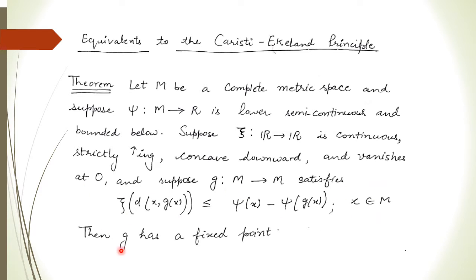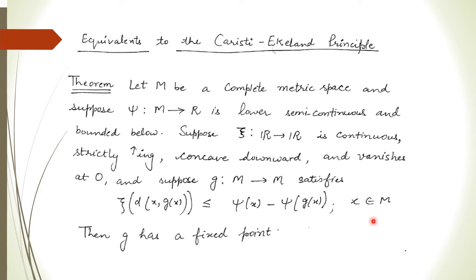Then the mapping g has a fixed point in m. So we are given m which is a complete metric space and we have three mappings: ψ, ξ, and g. ψ is lower semi-continuous and bounded below, ξ is continuous, increasing, concave downward and vanishes at 0, and g is a self-mapping satisfying the inequality ψ(d(x, gx)) ≤ ψ(x) − ψ(gx) for every x belonging to m. Then g has a fixed point.